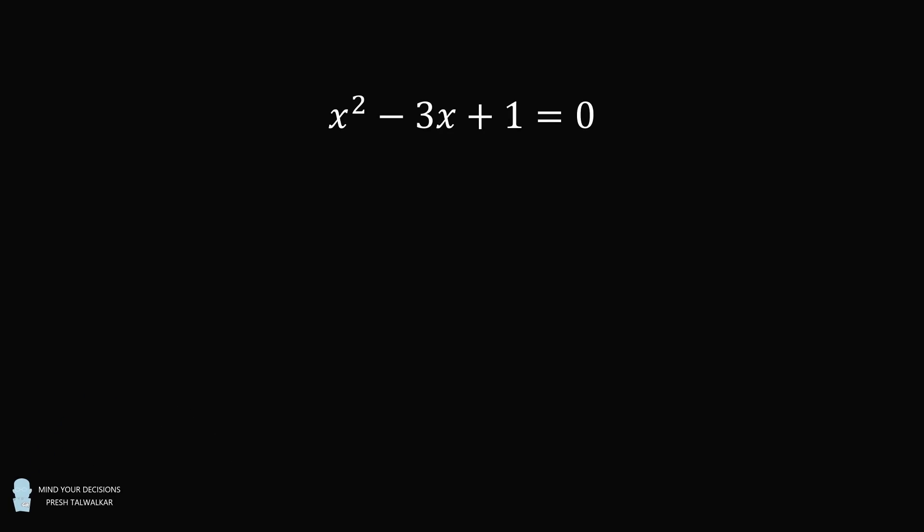Hey, this is Presh Talwalkar. Here's a fun little problem. If x squared minus 3x plus 1 is equal to 0, then find the value of x to the power of 5 plus 1 over x to the power of 5. I thank Sattvic in India for the suggestion. It turns out this type of problem is very common in standardized tests in India. So what's the systematic way to solve it? Let's go through it step by step.